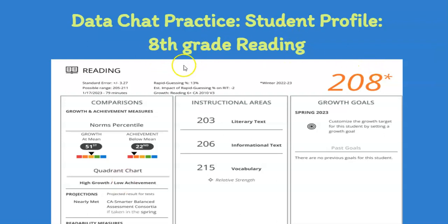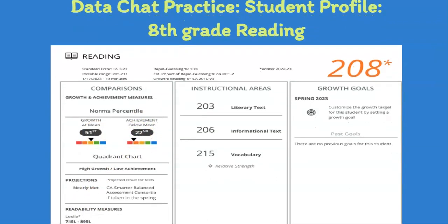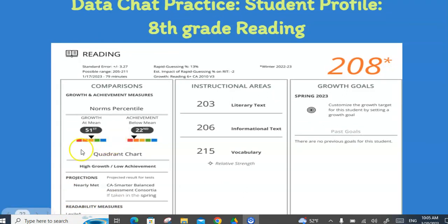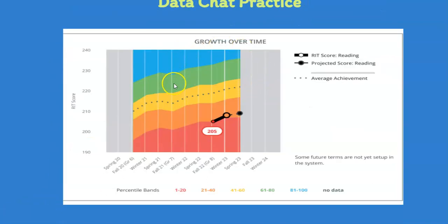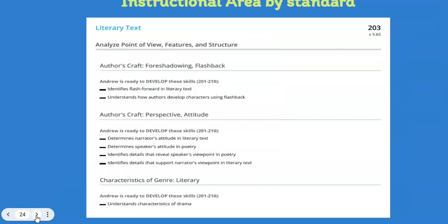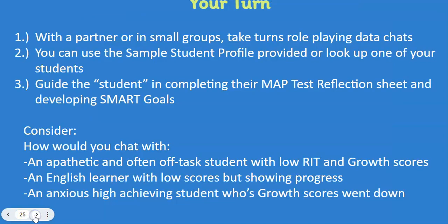When reviewing the student profile with a student, I would point out their RIT score and duration — for reading, about an hour is pretty average. They can point out the area they scored lowest in and set that as a target. If they were to take the CAASPP, they are projected at the 51st percentile for growth but lower on achievement, so we want to work on that. They can also see their own Lexile score down below. There's also a great visual for students to see their growth from fall to spring compared to the national average, and using the instructional area printout to identify which goals they have.